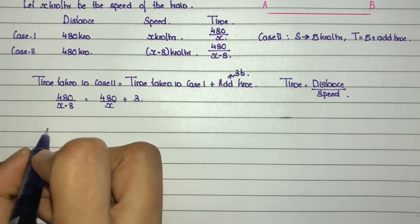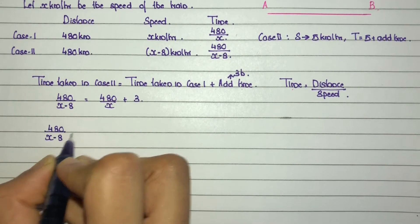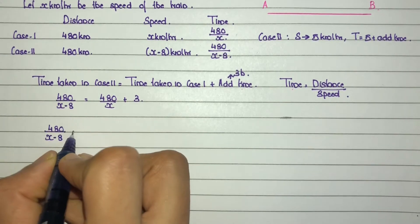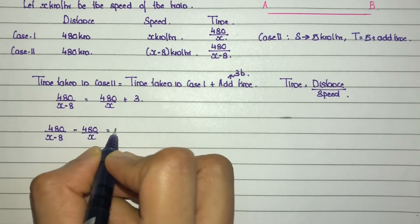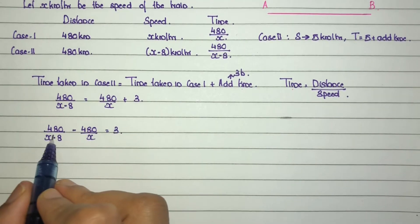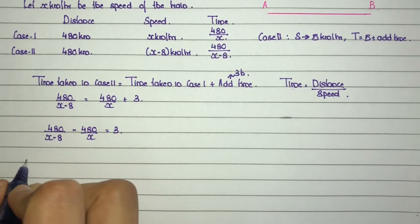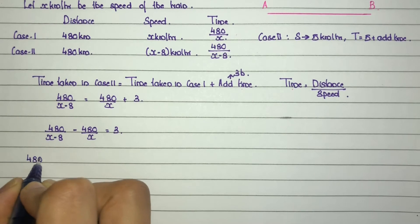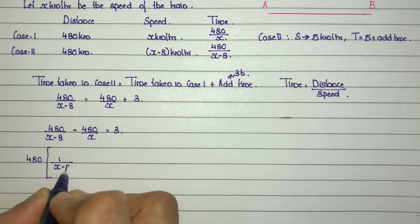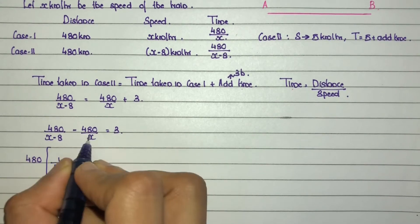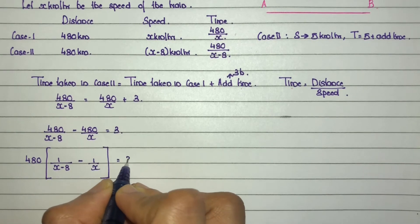Rearranging: 480 divided by (x minus 8) minus 480 divided by x equals 3.